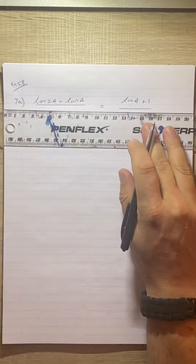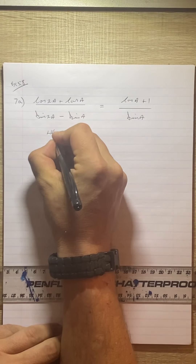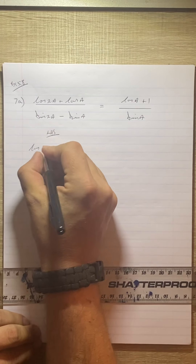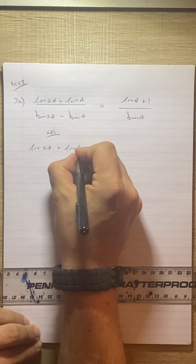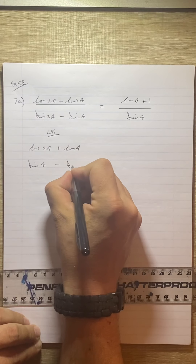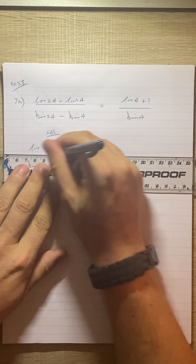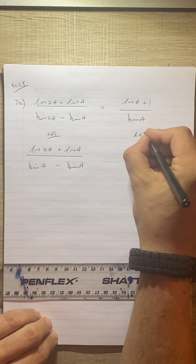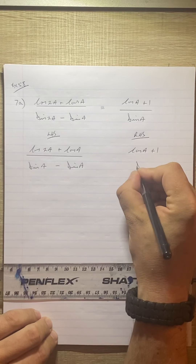This is a left-hand side, right-hand side type of question. On the left-hand side we have cos 2a plus cos a over sin 2a minus sin a. On the right-hand side we have cos a plus 1 over sin a.